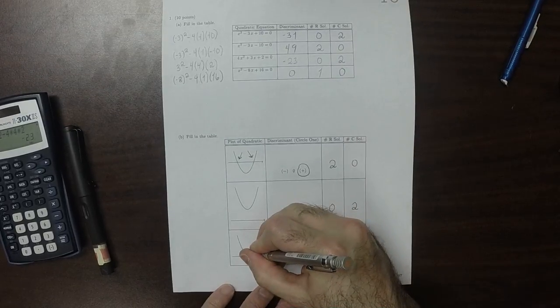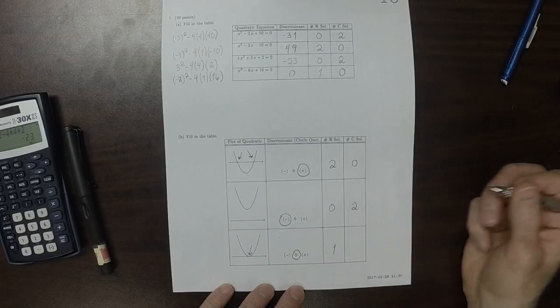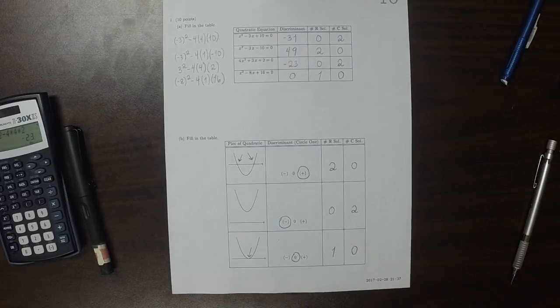And then here, there's just 1 intersection, so that means the discriminant is 0. There would be 1 real solution and 0 complex solutions. So that's the difference. Thank you.